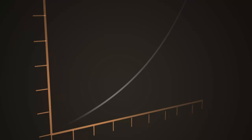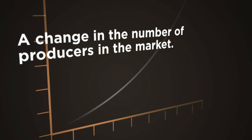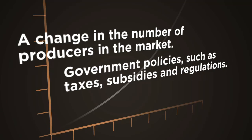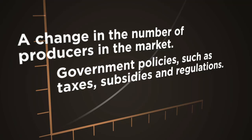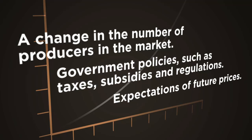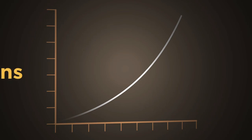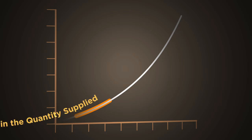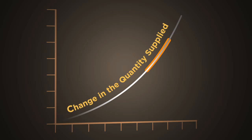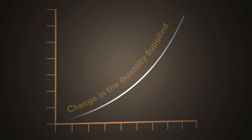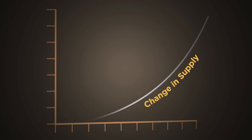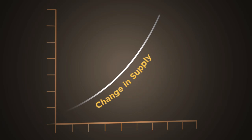Other things that might cause the supply curve to shift to the right or to the left include a change in the number of producers in the market, government policies such as taxes, subsidies, and regulations, and expectations of future prices. We call these factors a change in market conditions. Notice we have described two types of movements: a shift along the curve that we call a change in the quantity supplied, which reflects a change in price, and a shift of the curve that we call a change in supply, which reflects a change in market conditions.